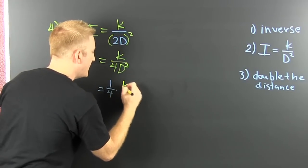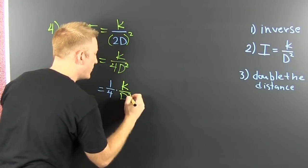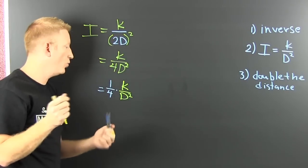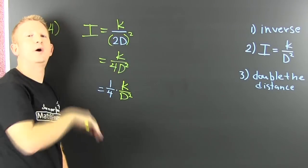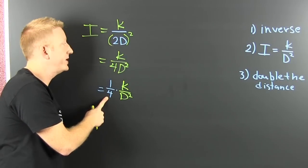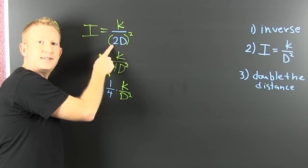Alright? So this is k over d squared. So we're wondering what happens to the intensity when we move our lamp up. Well, we get 1 fourth the amount of light when we go twice the distance.